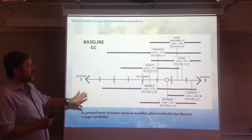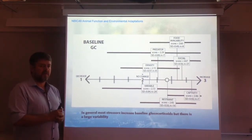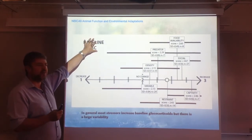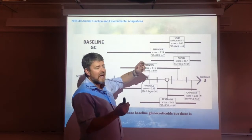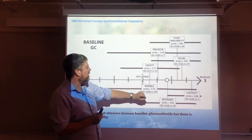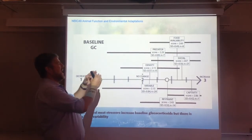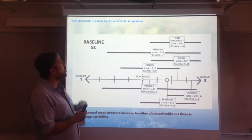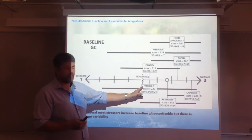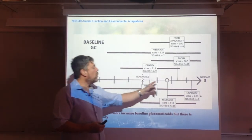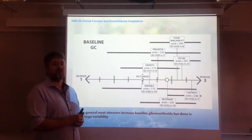The authors summarized their results in graphs that need some explanation. For baseline glucocorticoid levels, many different studies used different stressors — food availability, predator presence, social stability, density, variable stressors, and restraint or captivity. In all cases they provide a range of baseline glucocorticoid values associated with each stressor. The range goes from no change (value of 2), to a decrease (value of 1), to an increase (value of 3). While some stressors give a consistent response, others don't.